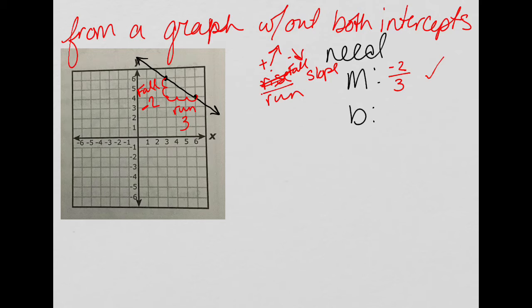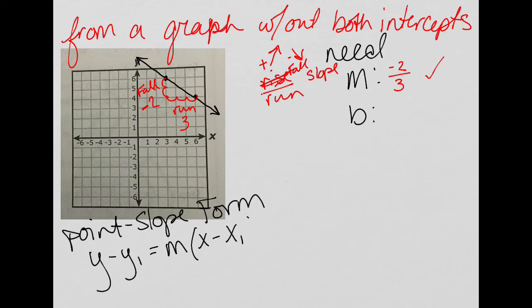Point-slope form is just another version of the equation of a linear function, and it's y minus y1 equals m times (x minus x1). The nice thing about point-slope is that you don't have to have the point of the y-intercept—you can literally have any point on the graph. So I'm going to use the point that's already been identified on my graph, which is at (6, 4). And I already found my slope to be negative 2 thirds.